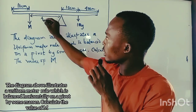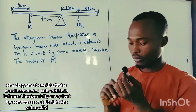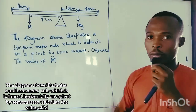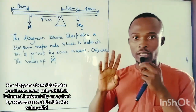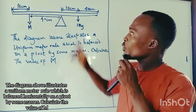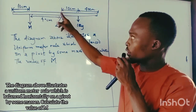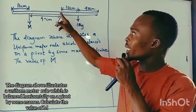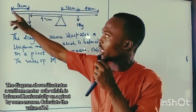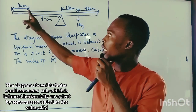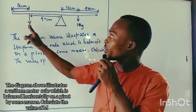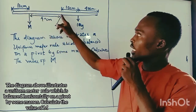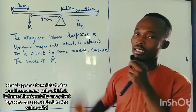Why is the distance 40 cm? The reason is that from end to end a uniform meter rule is 100 cm. We've been told that from the pivot to the other end is 50 cm, which means the remaining side is also 50 cm. Since the object is placed 10 cm from that end, the distance from the object to the pivot will be 40 cm.